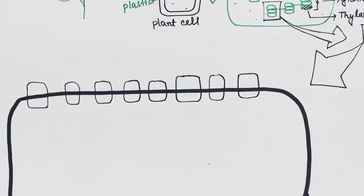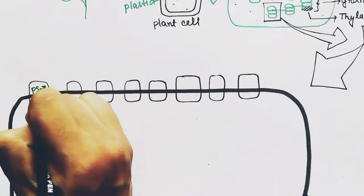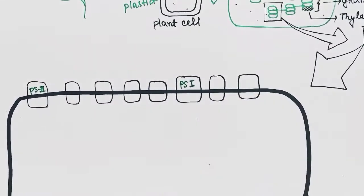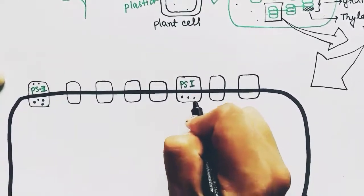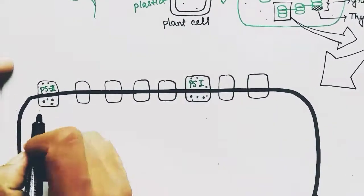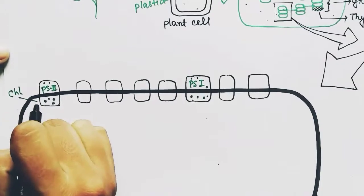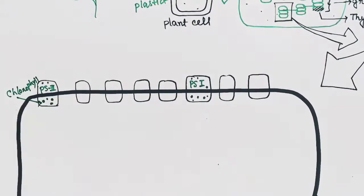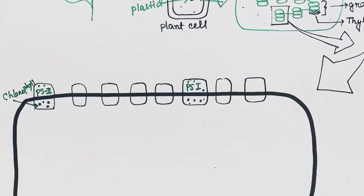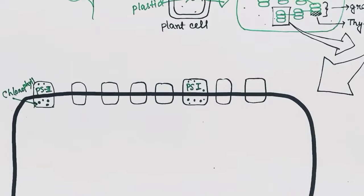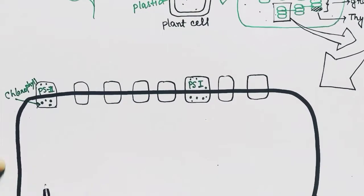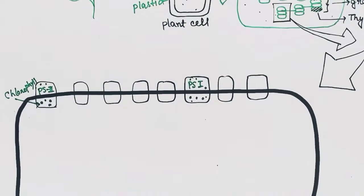Among the proteins, two — PS2 and PS1 — have chlorophyll in them. Chlorophyll will receive the photons and will absorb the energy from the photon. The other proteins are carrier proteins; they do not have chlorophyll.